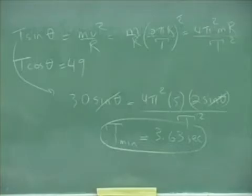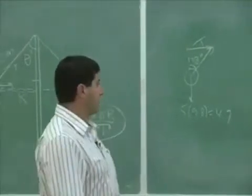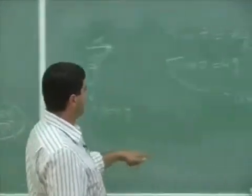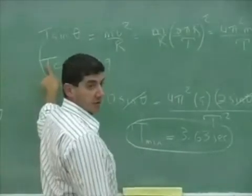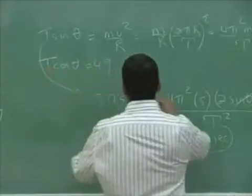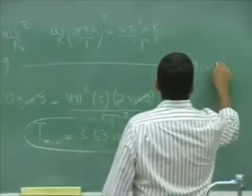Now what's the angle at which it's gonna break? So now you could put here 30 and you can solve for the angle, right? So over here, 30 cosine theta.